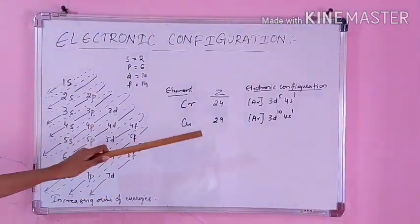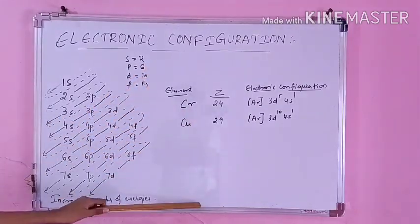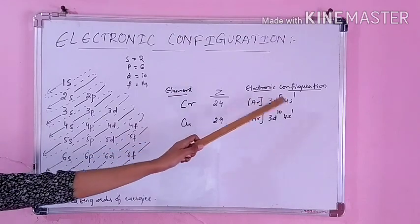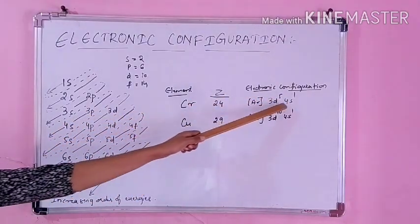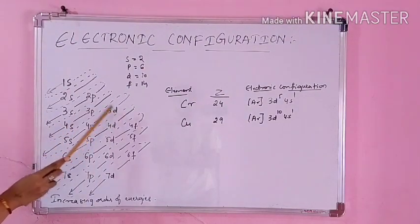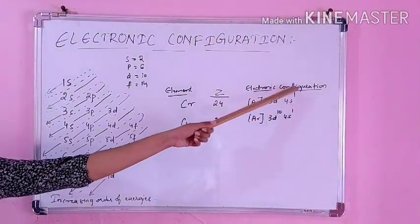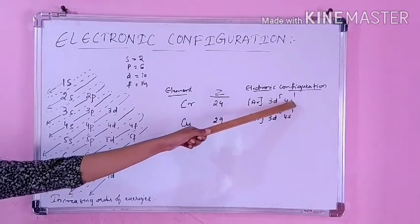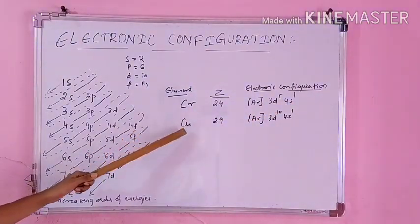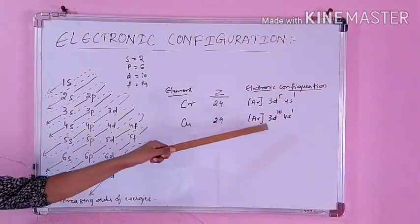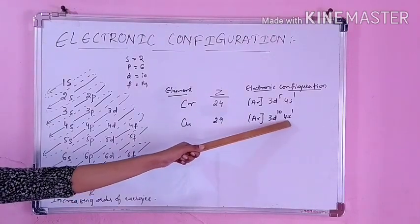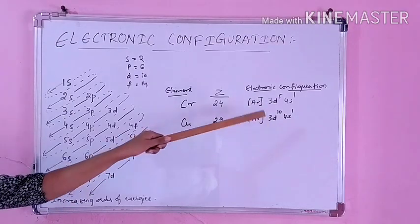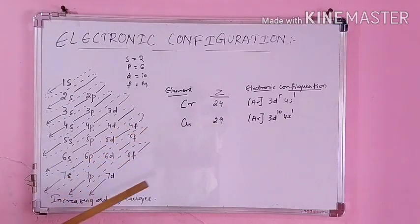While writing electronic configuration up to atomic number 30, there are two exceptions: chromium (Z=24) and copper (Z=29). For chromium, one electron jumps from the 4s orbital into the 3d orbital to gain the extra stability of a half-filled configuration — both 4s and 3d become half-filled. Similarly for copper (Z=29), one electron jumps from 4s into 3d to achieve a fully-filled 3d orbital, gaining complete stability. These two are the exceptions up to atomic number 30.